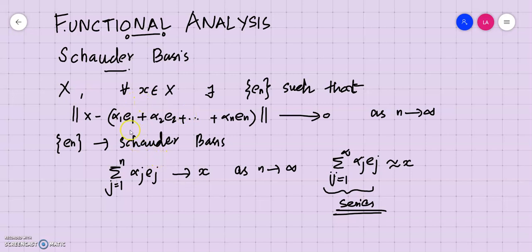This series expansion is what a Schauder basis means. Corresponding to every element in the normed space, if there exists a collection of vectors such that a particular series expansion of that collection converges to the chosen point, such vectors are called a Schauder basis. Note that not every normed space may have a Schauder basis — this is something we can examine only for particular normed spaces.